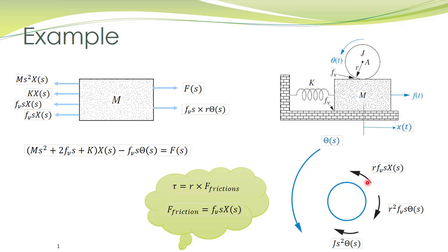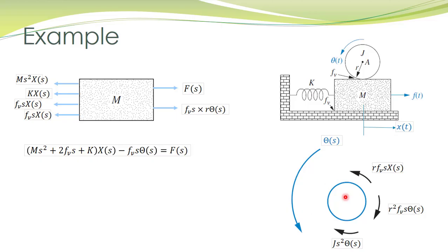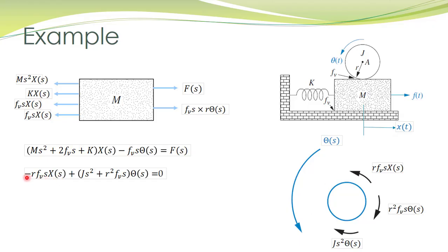Now we have the complete free body diagram for the rotating disk. For this free body diagram, we can write the torque balance equation. The sum of torques in the clockwise direction equals the sum of torques in the counterclockwise direction. The counterclockwise term is brought to the left-hand side with a negative sign.